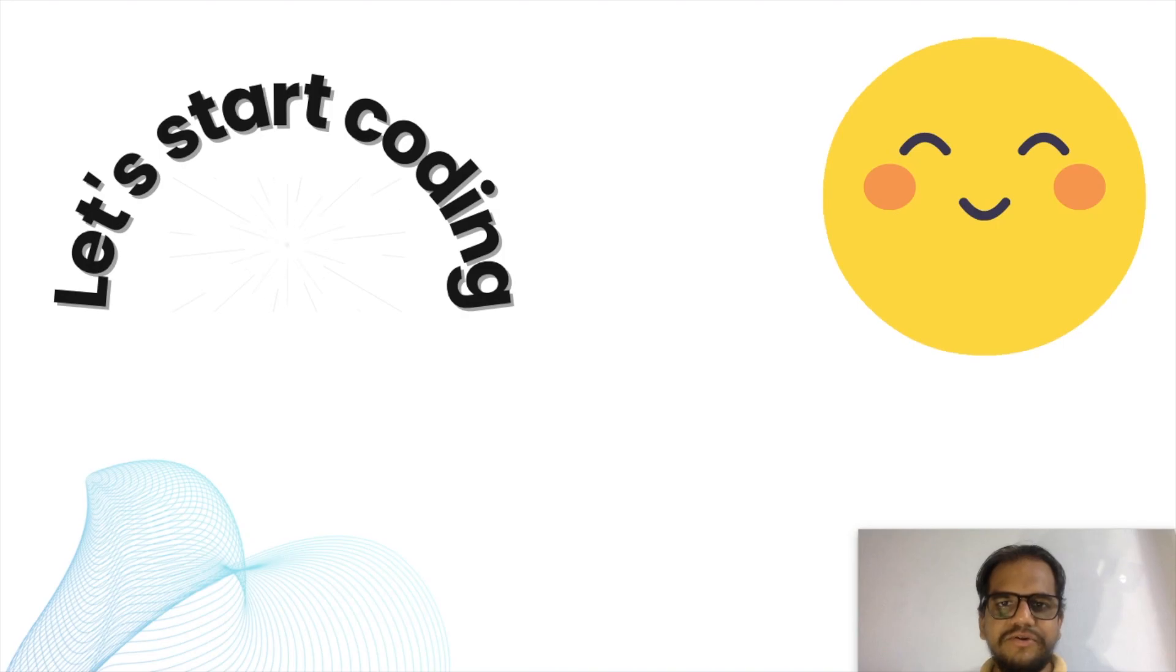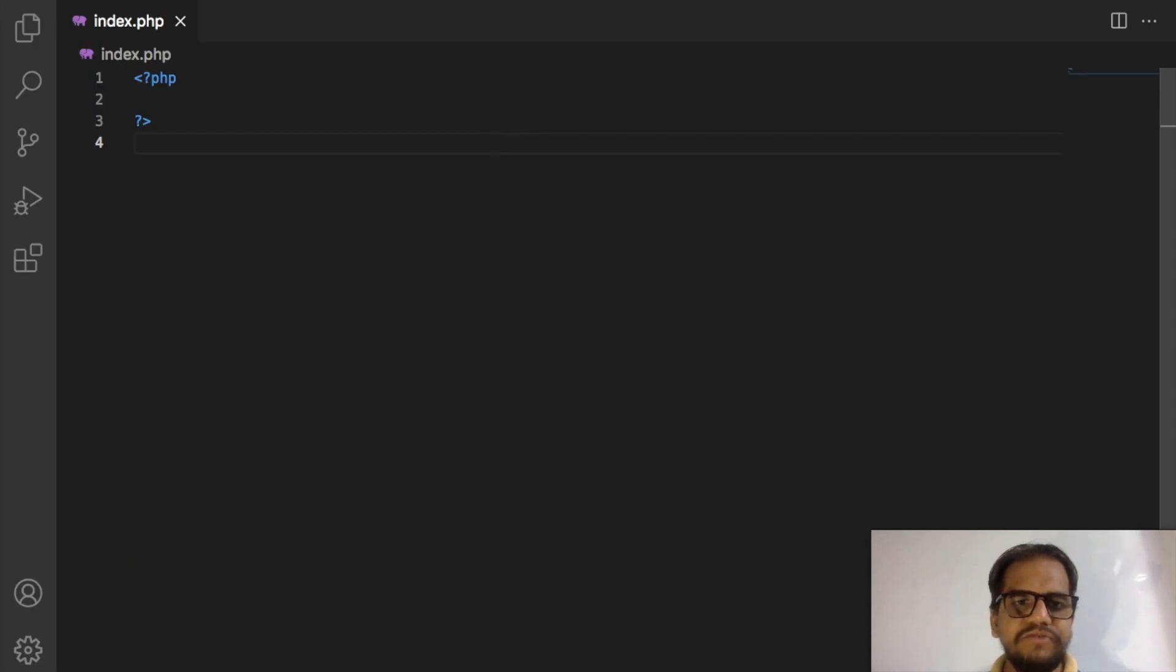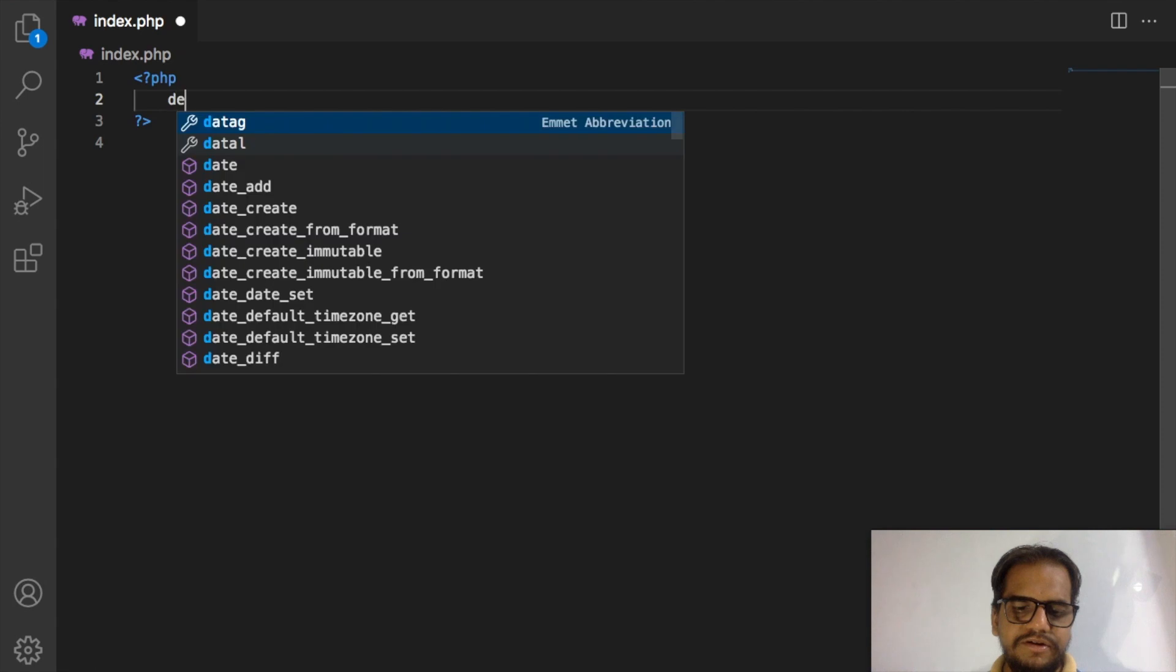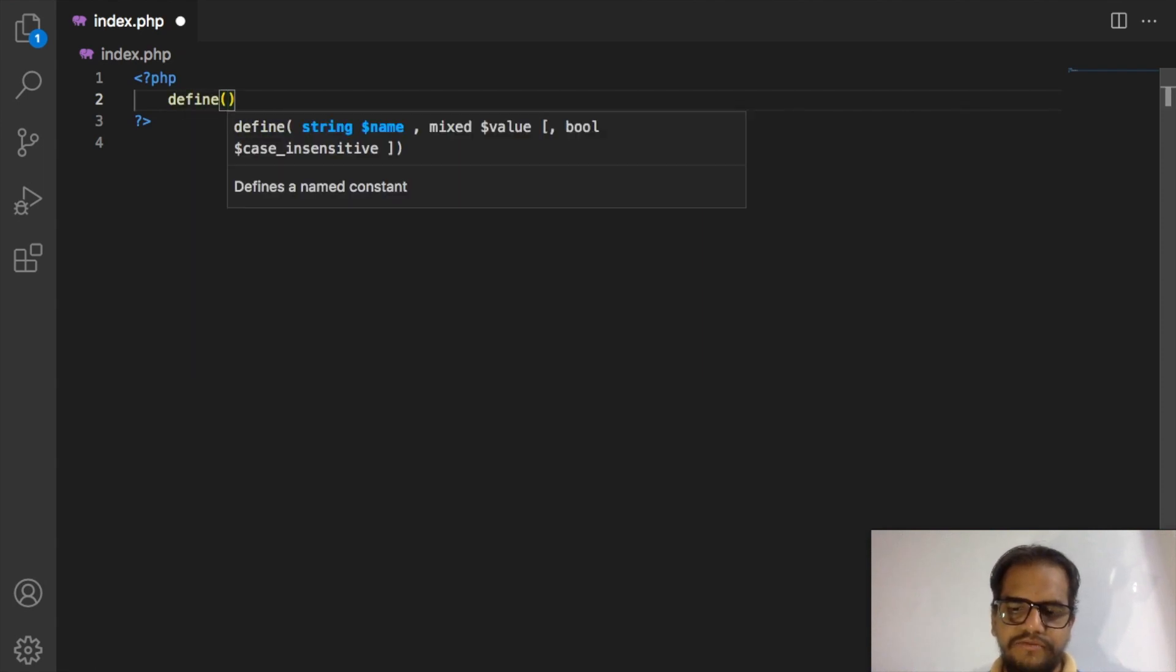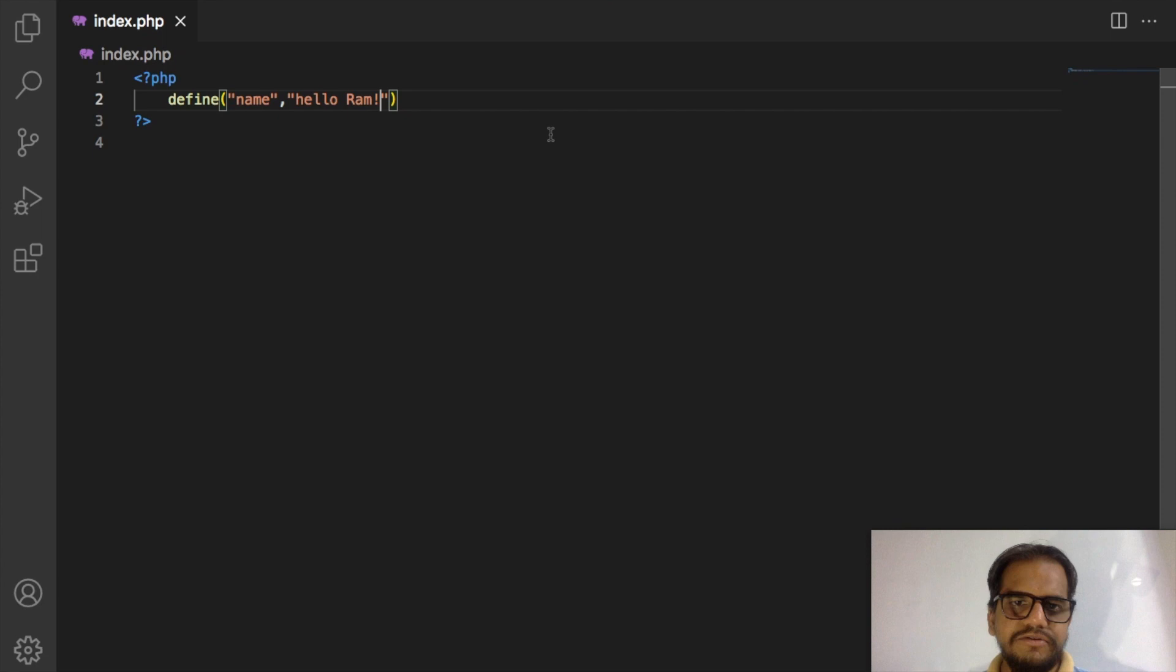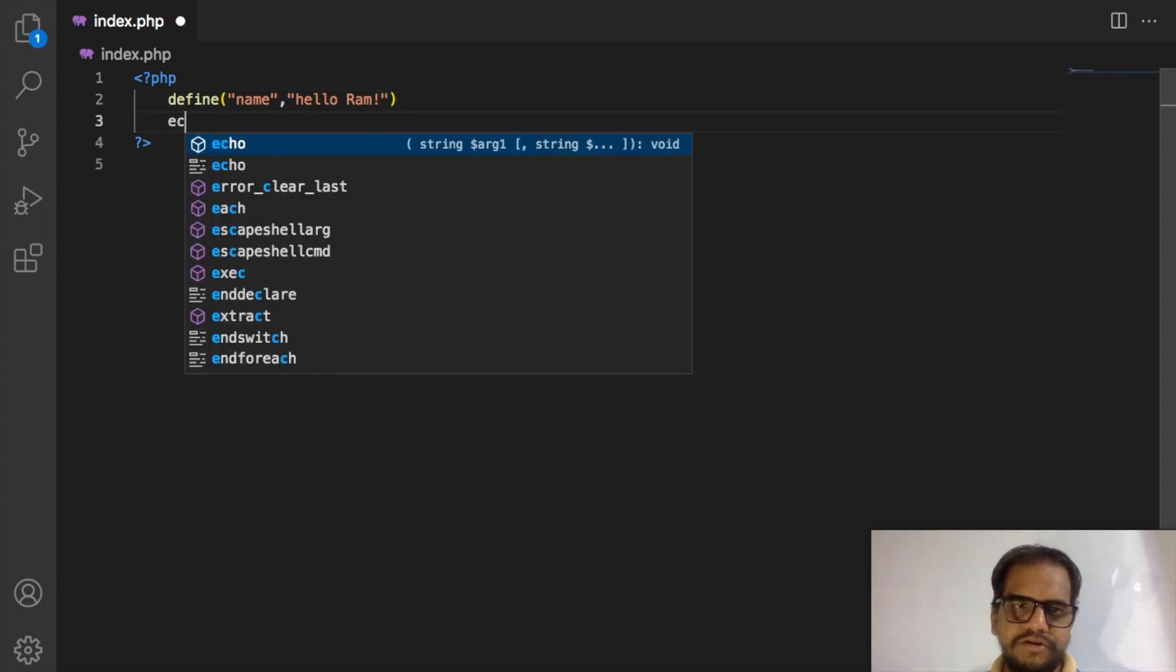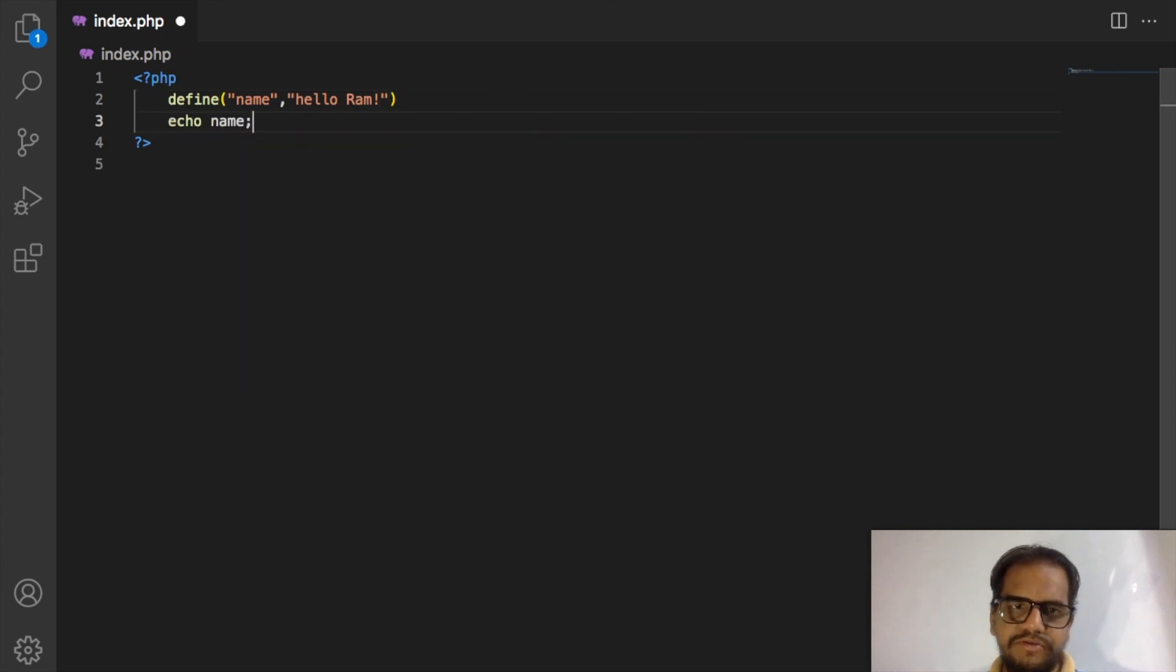Let's start the coding. We can take here one function like define, and we can put here first string is name as the variable name, and second is string is hello Ram, so simple. And we can print this one using echo name, so simple. Now we can check this one.